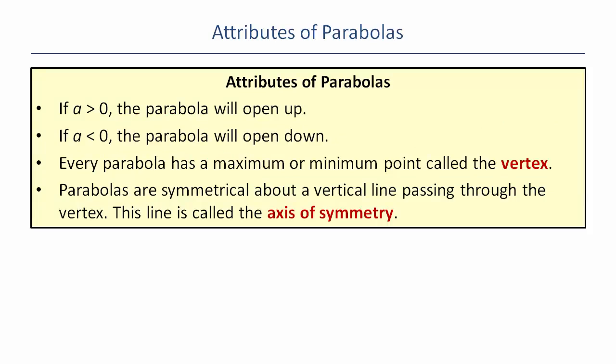Some attributes of our parabolas. If a is greater than zero, the parabola opens up. Meaning you have a trough. It looks something like this. Or it can be really wide or super narrow. They're all opening up and then of course opening down. It looks like that.